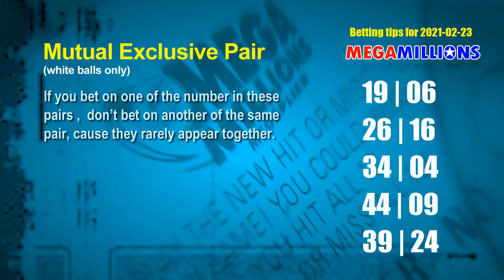Besides these best numbers, you can also pick numbers through the following units digit rule yourself. Here are some tips to increase hit odds, such as mutual exclusive pairs. Numbers in mutual exclusive pairs both match the following ones rule, but according to hundreds of results, they rarely appear together — so if you bet on one, don't bet the other in the same pair. The white ball mutual exclusive pairs for the next draw are: pair 1: 19 and 06; pair 2: 26 and 16; pair 3: 34 and 04; pair 4: 44 and 09; pair 5: 39 and 24.